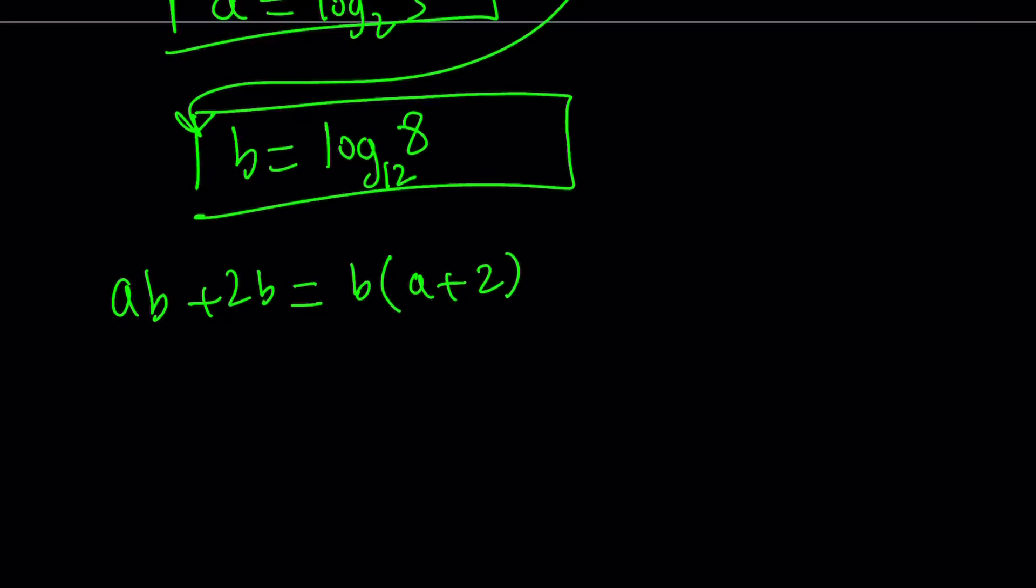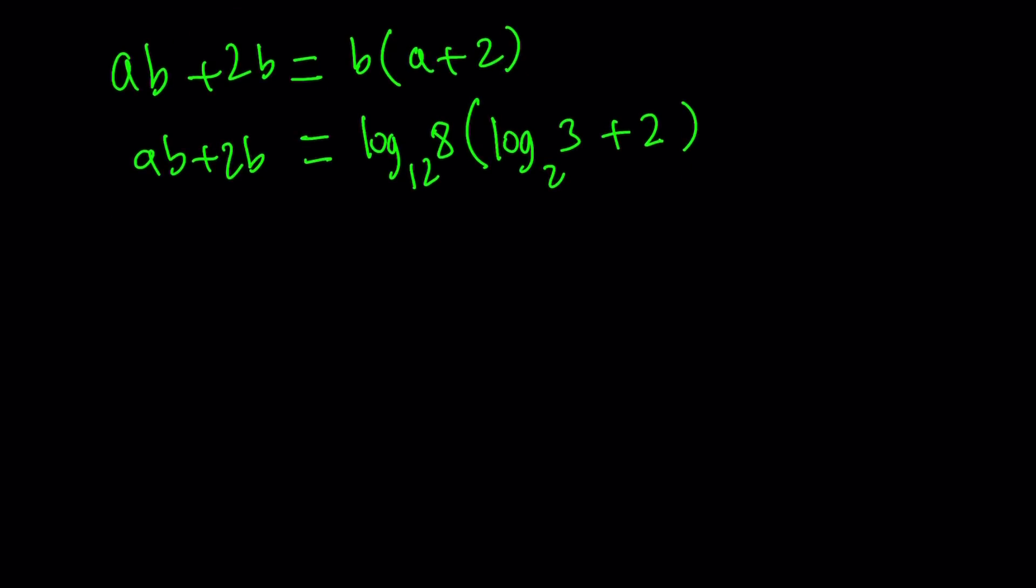Now I can go ahead and replace b and a with what they are. b is log 8 base 12. a is log 3 base 2. Of course, there is a plus 2 inside the parentheses. And this is what I'm trying to evaluate. Because this is equal to ab plus 2b. Okay.